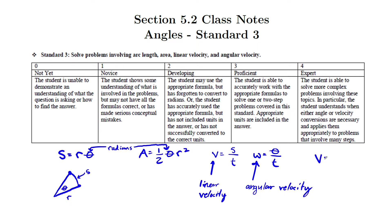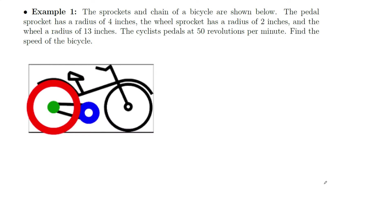Lastly, we have the formula that relates these two: linear velocity equals the radius times angular velocity. Equipped with those five formulas, let's take a look at some problems.